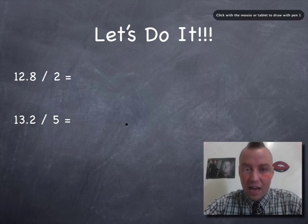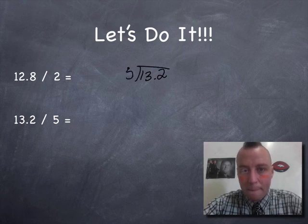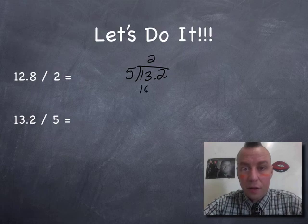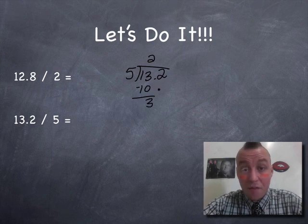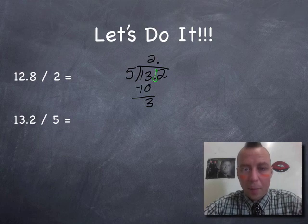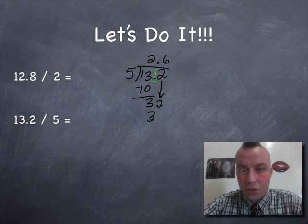13.2 divided by 5. We're going to start by setting it up the same way we normally do. 13.2 divided by 5. How many times does 5 go into 1? It doesn't. How many times does 5 go into 13? It goes in twice. And we know that because 2 times 5 equals 10. 13 minus 10 equals 3. And before we drop this 2 down, look, here's our decimal point. So we are going to move it up into the answer up here, directly up above. So now we can drop down our 2. How many times does 5 go into 32? It goes in 6 times because 6 times 5 equals 30. But 32 minus 30 equals 2.